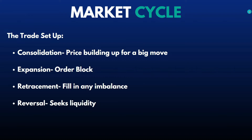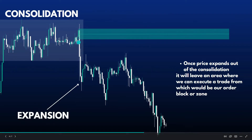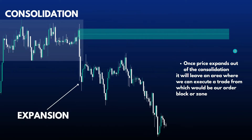Those are the four main components of a trade setup. Here we have our consolidation — we can see price is making equal highs and equal lows. Price then breaks out of that consolidation, which we call expansion, which leaves imbalance. Once price expands out of the consolidation, it leaves an area where we can execute a trade from, which would be our order block zone.